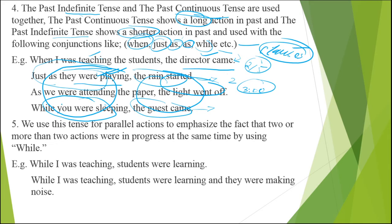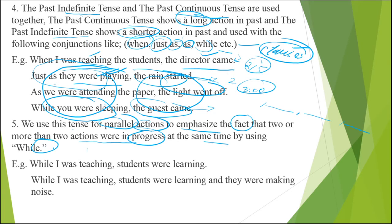Usage number five: we use this tense for parallel actions. Parallel action means at the same time different activities are going on — two or more. We use this tense for parallel actions to emphasize the fact that two or more actions were in progress at the same time, by using 'while.' Here you will be using the subordinating conjunction of time, which is 'while.'